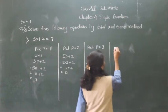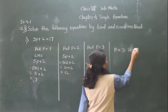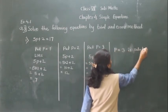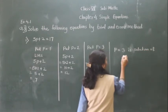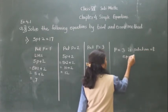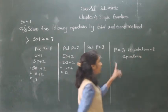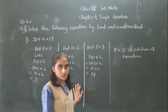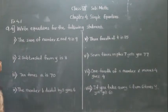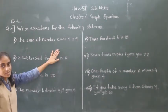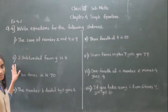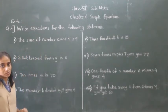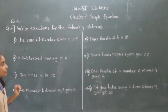So P equal to 3 is the solution of the given equation. Everyone understood this? Let's solve question number 4 — write equations for the following statements. Here, statements are given and we have to form the equation for each statement.